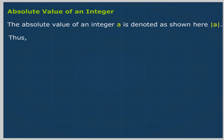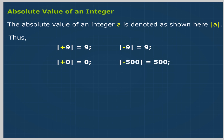Thus, absolute value of +9 is equal to 9. Absolute value of −9 is equal to 9. Absolute value of 0 is equal to 0. Absolute value of −500 is equal to 500.